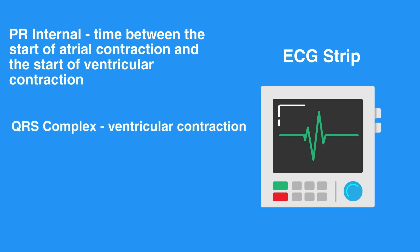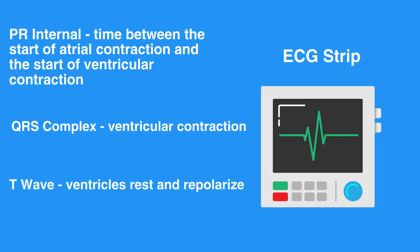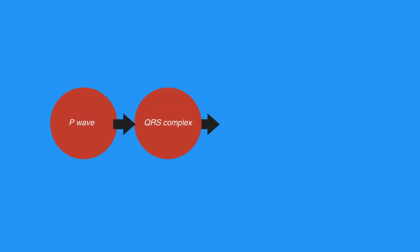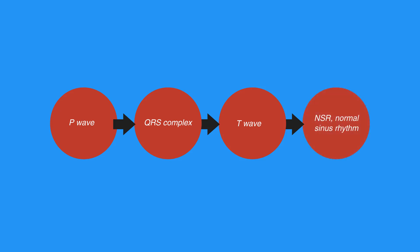Following ventricular contraction, the ventricles rest and repolarize, which registers as the T wave. The atria also repolarize, but this coincides with the QRS complex; therefore, it cannot be observed on the ECG strip. The P wave, QRS complex, and T wave together at proper intervals are indicative of normal sinus rhythm, or NSR.